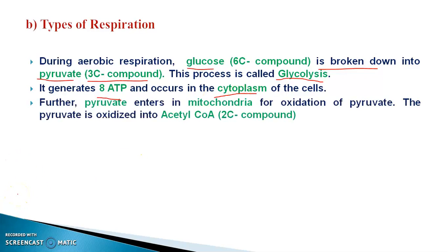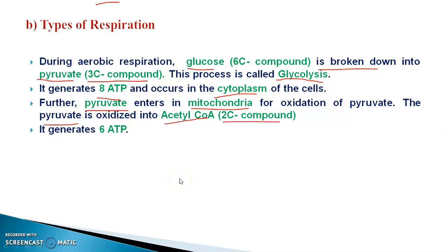After glycolysis, pyruvate enters the mitochondria. For the further oxidation of the pyruvate inside the mitochondria, this pyruvate is oxidized into acetyl-coenzyme A, which is a 2-carbon compound. So initially there was a 6-carbon glucose, first broken down into 3-carbon pyruvate in the cytoplasm, and then inside the mitochondria it converts into 2-carbon acetyl-coenzyme A. This conversion generates a total of 6 ATP. So we have 8 ATP in the cytoplasm during glycolysis, and 6 ATP from pyruvate to acetyl-coenzyme A inside the mitochondria.